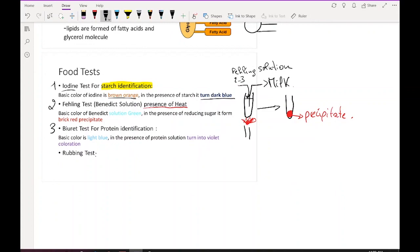Biuret test is for protein identification. To know if food contains protein, like chicken, which we know contains protein, how do we identify it? We do the biuret test. Biuret basic color is light blue. In the presence of protein, it turns violet. I add two drops of biuret solution, and after a while, it turns violet, confirming that this food contains protein.